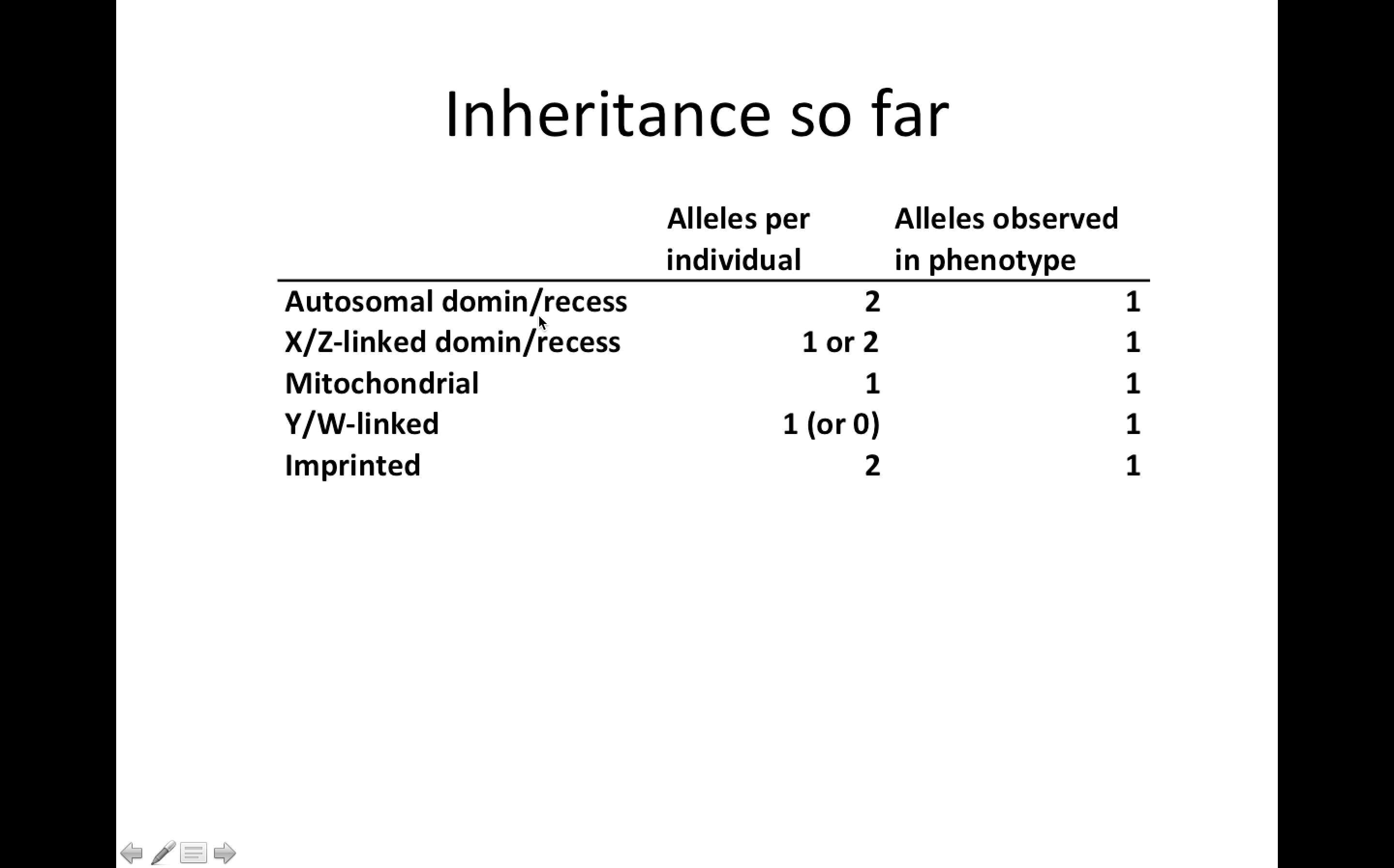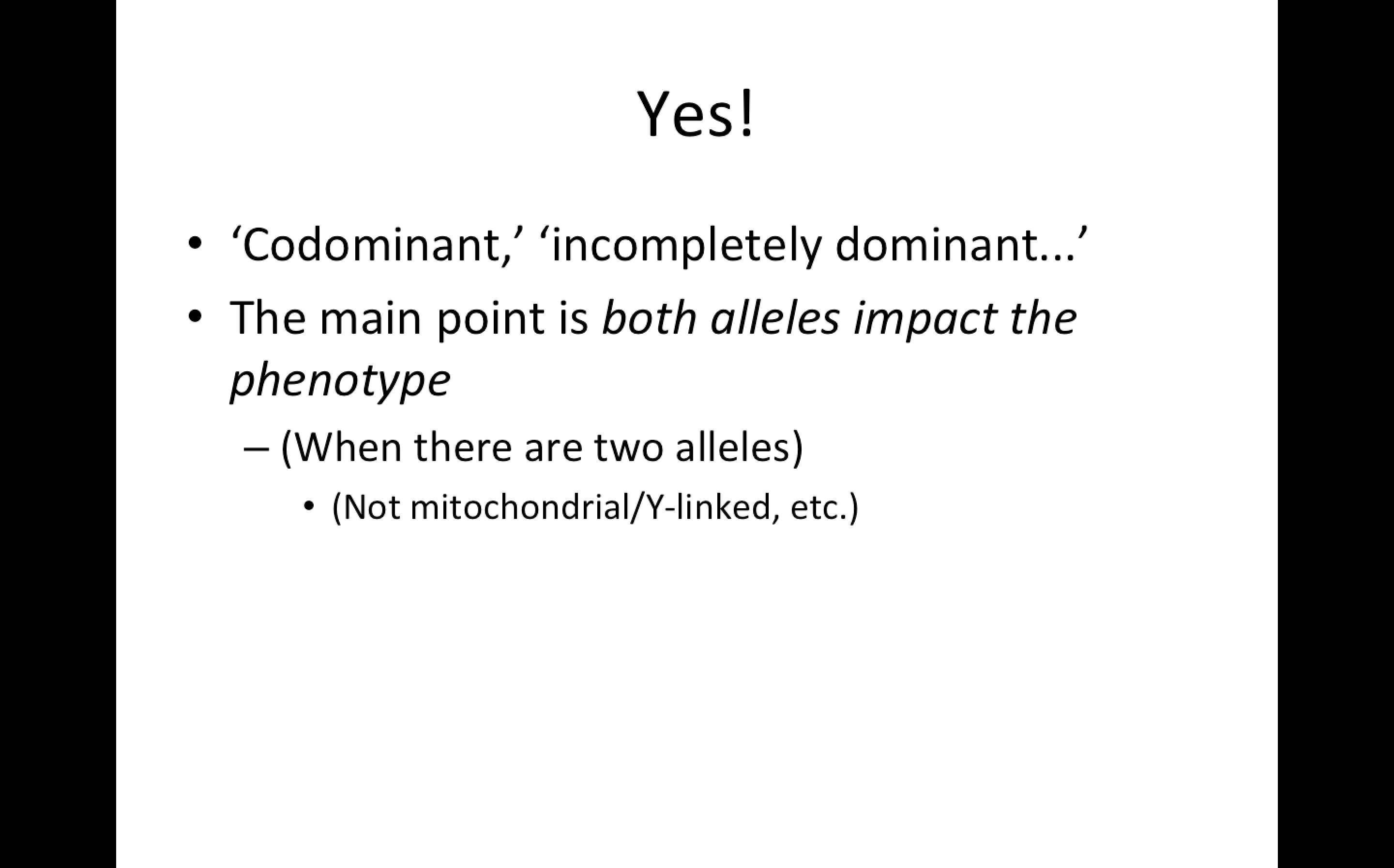So in an autosomal dominant recessive case, if you have a dominant allele, then you won't observe the second allele, whether it be recessive or dominant. We just see the presence of one allele. In the mitochondrion, we only have one allele, just like in the Y or the W, and so we only see one allele. And so that raises the question, can it ever be two? And it turns out, yes, it totally can.